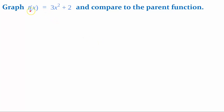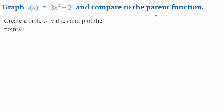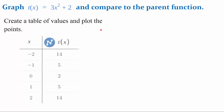Let's graph function t, which is 3x squared plus 2, and then compare it to the parent function. You can follow along with me, or pause the video to try this on your own and hit play when you're ready to check your work. I'm going to create a table of values and plot the points using the same 5 inputs. For x equals negative 2: negative 2 squared is 4, times 3 is 12, plus 2 is 14.